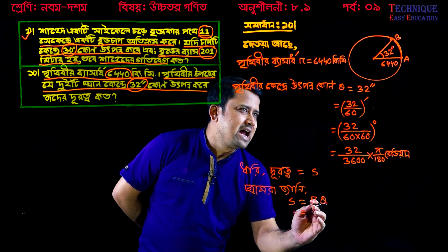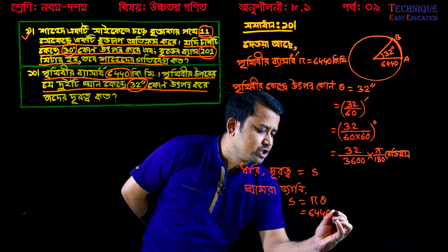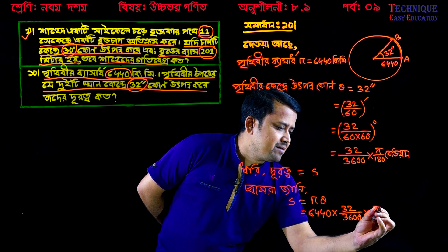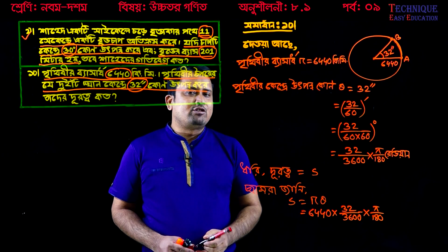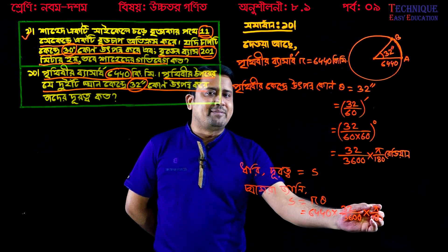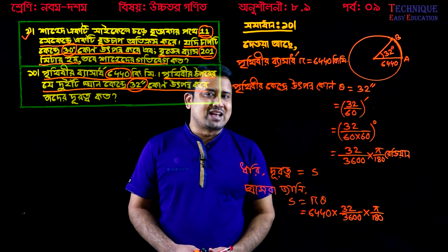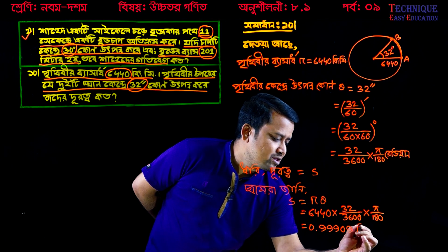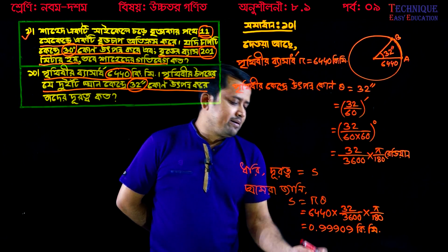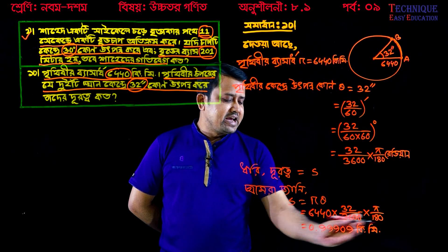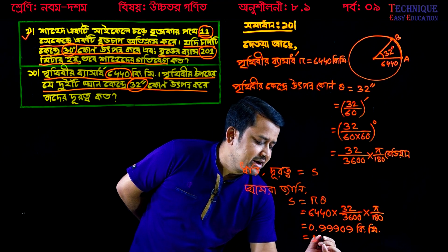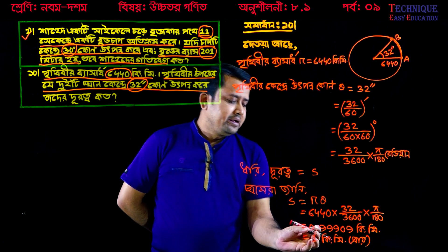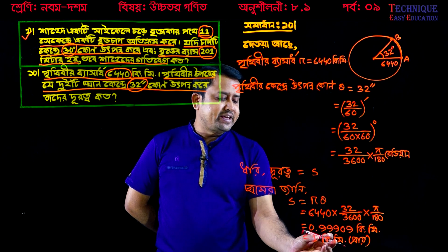Now let us know that rn gives us 3664 km. R theta is equal to eta, theta, r, rn. Now let us do the calculation: 3664 minus 32, minus 3.1416. Since we are going to break this video, 0.9999 is equal to 0.9999. This is equal to 1 kilometer. This is equal to 0.9999. 0.9999 is equal to 1 kilometer.